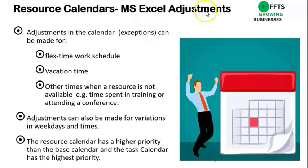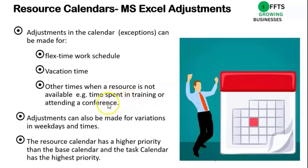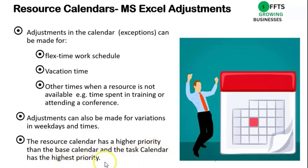In terms of our Excel adjustments, we can adjust for flexi time, vacation leave, and other times when a resource is not available — for example, time spent in training or attending a conference. Adjustments can also be made for variations in work and weekend times. Suppose a person is part-time and only works on Friday and Tuesday — that needs to be reflected in planning and in the resource calendar. The resource calendar has a higher priority than the base calendar, and the task calendar has the highest priority.